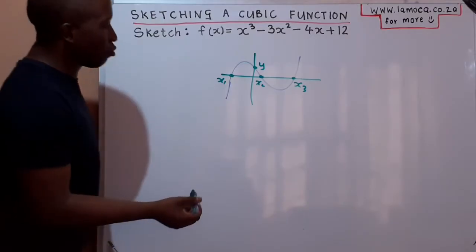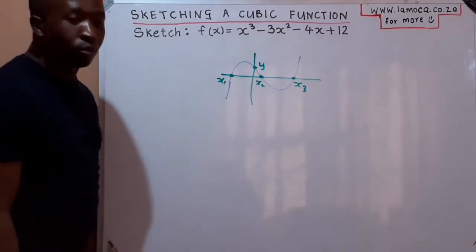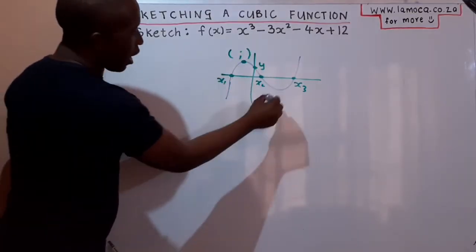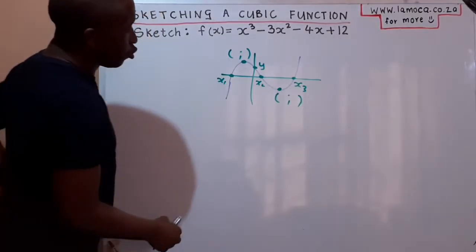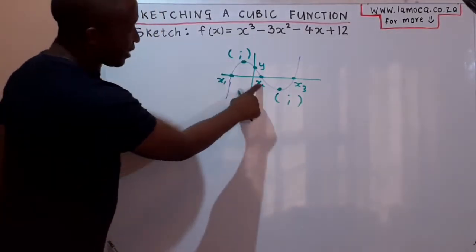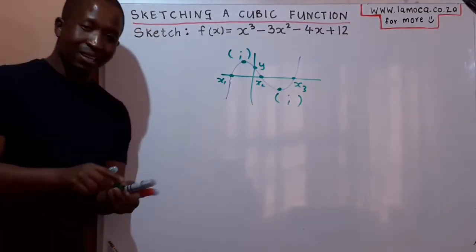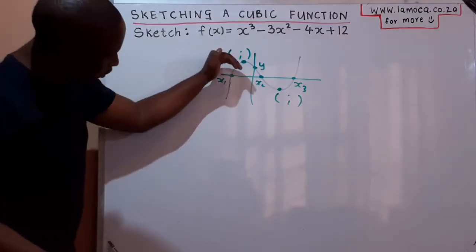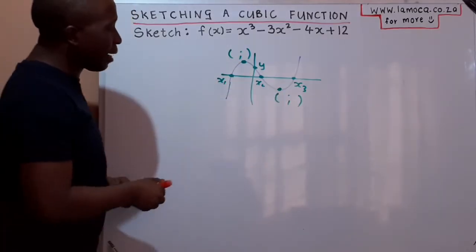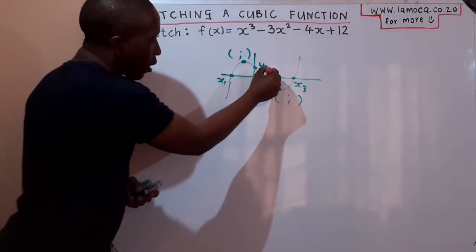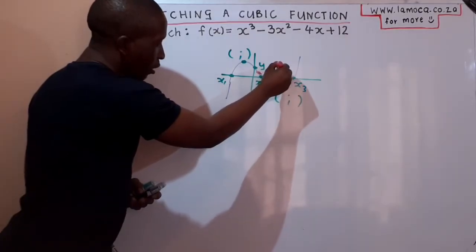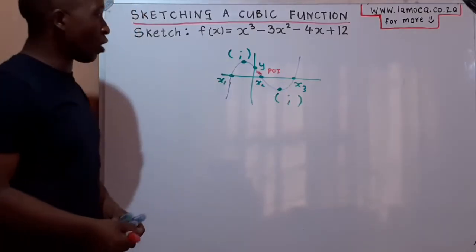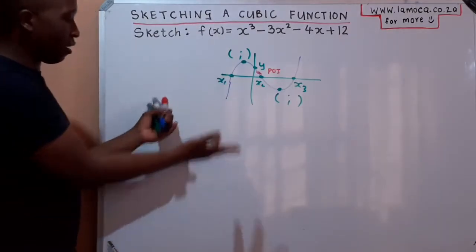Another thing you might be interested in is that this kind of graph has two turning points. We need the coordinates of those turning points — each has an x and a y coordinate. It also has a point known as the point of inflection, which is where it changes concavity from being concave down to being concave up. That transition happens at the point of inflection, somewhere in the middle of the graph.